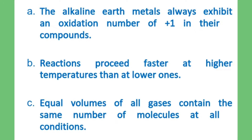Statement A: The alkaline earth metals always exhibit an oxidation number of plus one in their compounds. Alkaline earth metals actually have an oxidation number of plus two.